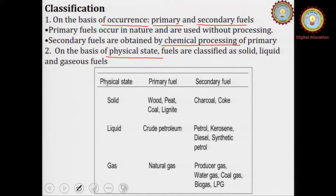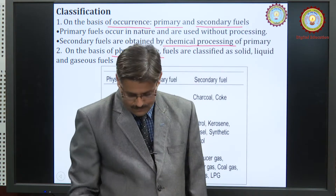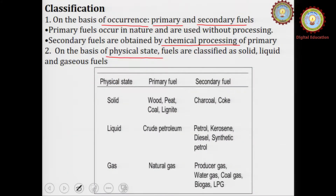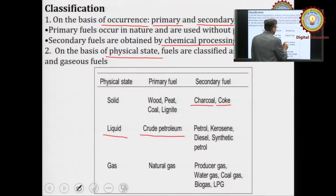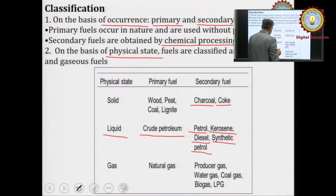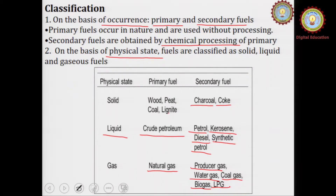On the basis of physical state, fuels are of three types: solid fuel, liquid fuel, and gaseous fuel. In the table, solid primary fuels are wood, peat, coal, and lignite; secondary fuels are charcoal and coke, derived from coal. Liquid fuels: crude petroleum oil is the primary fuel, and after refining we get petrol, kerosene, diesel, and synthetic petrol as secondary fuels. Similarly, natural gas is the primary gaseous fuel, and producer gas, water gas, coal gas, biogas, and liquefied petroleum gas (LPG) are all secondary fuels.